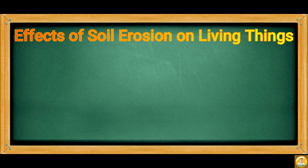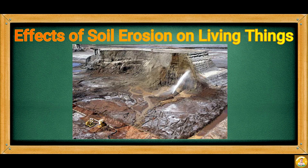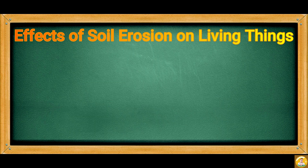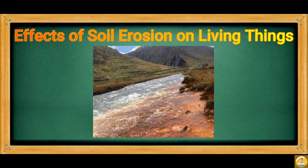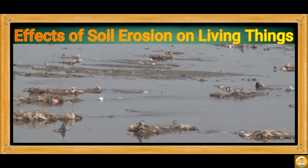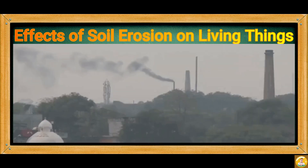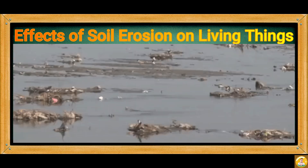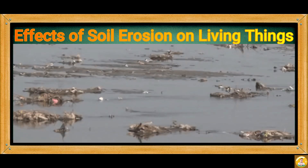Another negative effect of erosion is the prevalence of mine tailings, which are mineral waste or leftovers after the mining process. Erosion brought by water can wash mine tailings into nearby bodies of water and pollute them. Polluted seas and rivers can affect aquatic plants and animals, as well as the potable water supply of animals and humans.